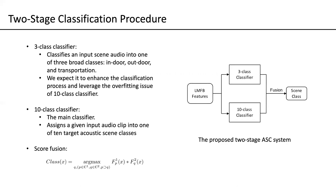The two-stage classification procedure is the main part of our proposed ASC system. As shown in the figure, it consists of two CNN classifiers: a three-class classifier and a ten-class classifier. The three-class classifier classifies the input audio into one of three broader classes — indoor, outdoor, and transportation. This grouping comes from prior knowledge that scene classes can be roughly grouped into these three general classes. We expect it to enhance the classification process of the ten-class classifier. The ten-class classifier is the main classifier, classifying the input audio into one of the ten targeted scene classes. The final decision is made from the score fusion of these two classifiers.